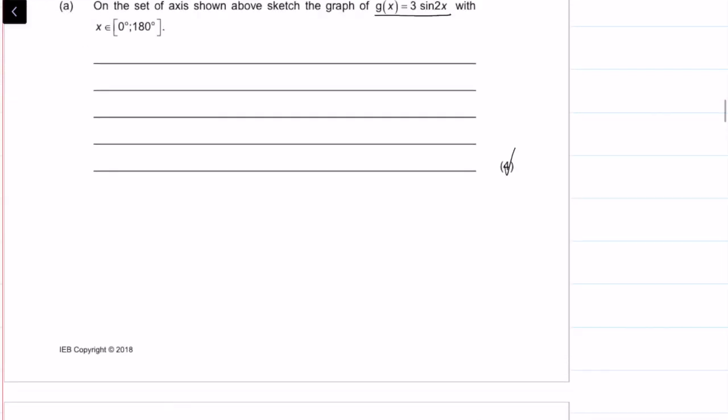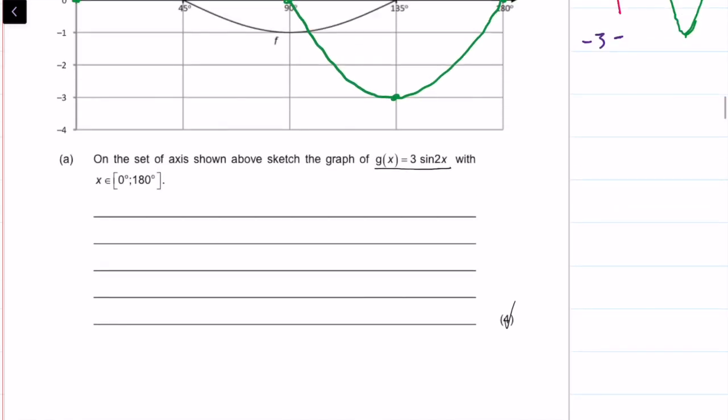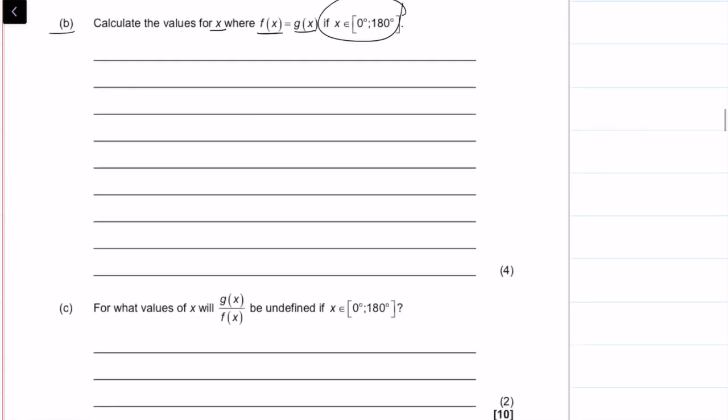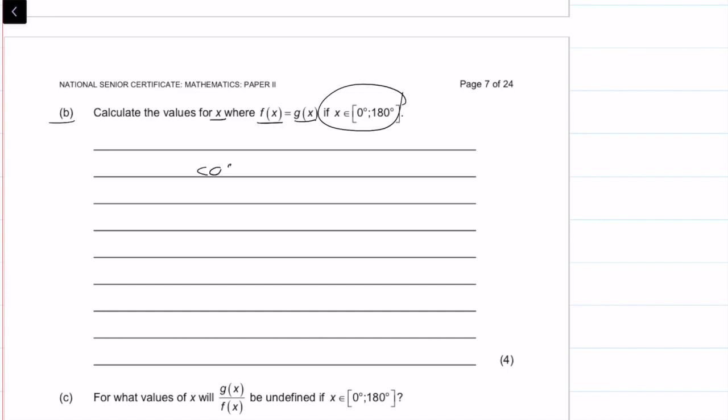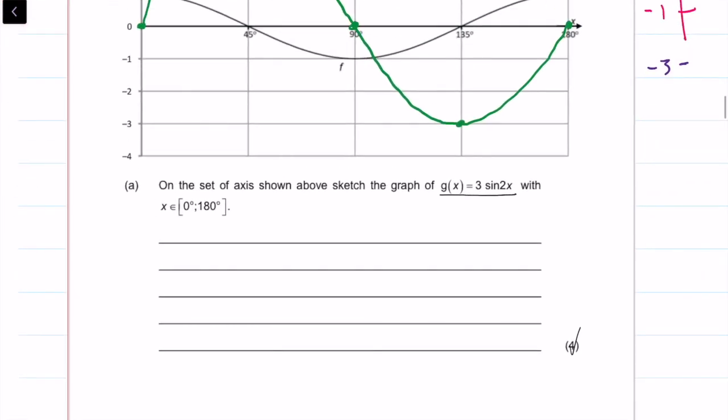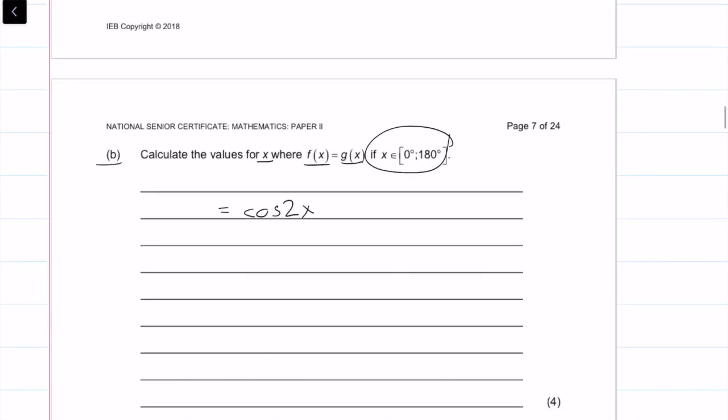Part B says calculate the values for x where f of x is equal to g of x in that period right there. So we already know what f of x is. f of x is cos 2x. So cos 2x, and we want that to be equal to g of x. Let's put g of x in front, which was equal to 3 sine 2x.